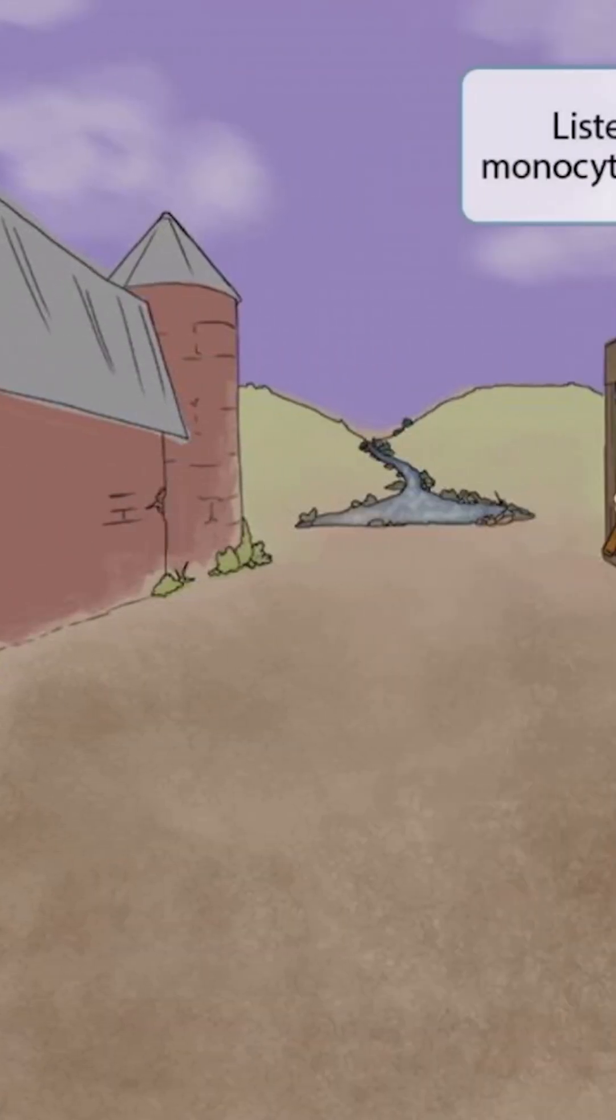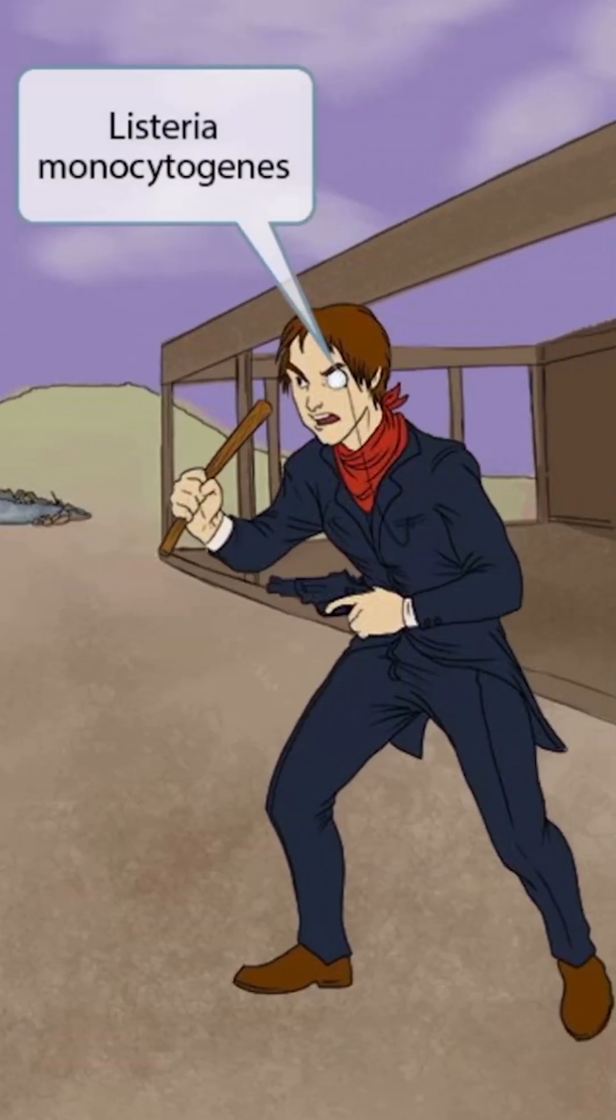This scene will take place in an old western town with a duel between two gunslingers. The first character is this guy with a monocle. Monocle sounds kind of like monocytogenes, so we're using it in this image as a symbol for Listeria monocytogenes.